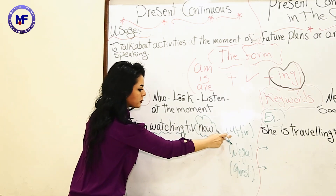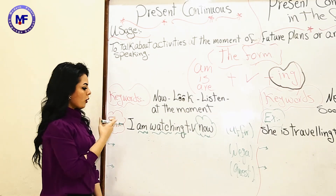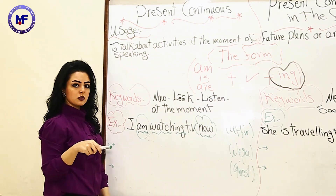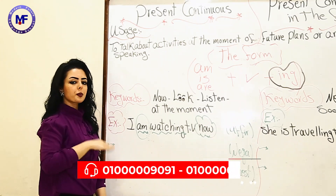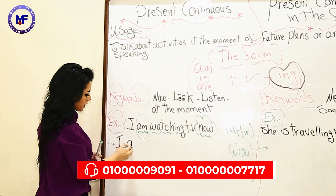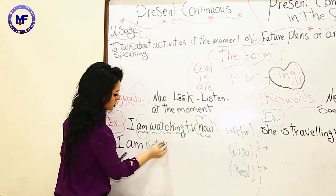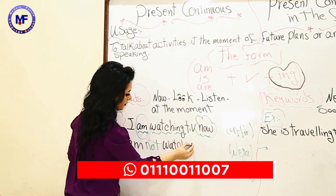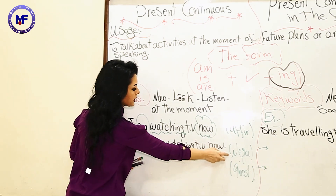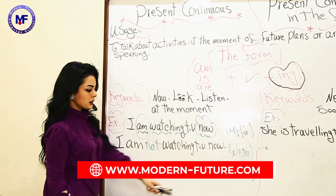That's the affirmative form. If you want to change it into negative form, you have 'am' as the verb to be, and we said that if you want to put 'not', you will put it after the verb to be. So you will write: 'I am not watching TV now.' If you want to make it negative, just put 'not' after the verb to be.